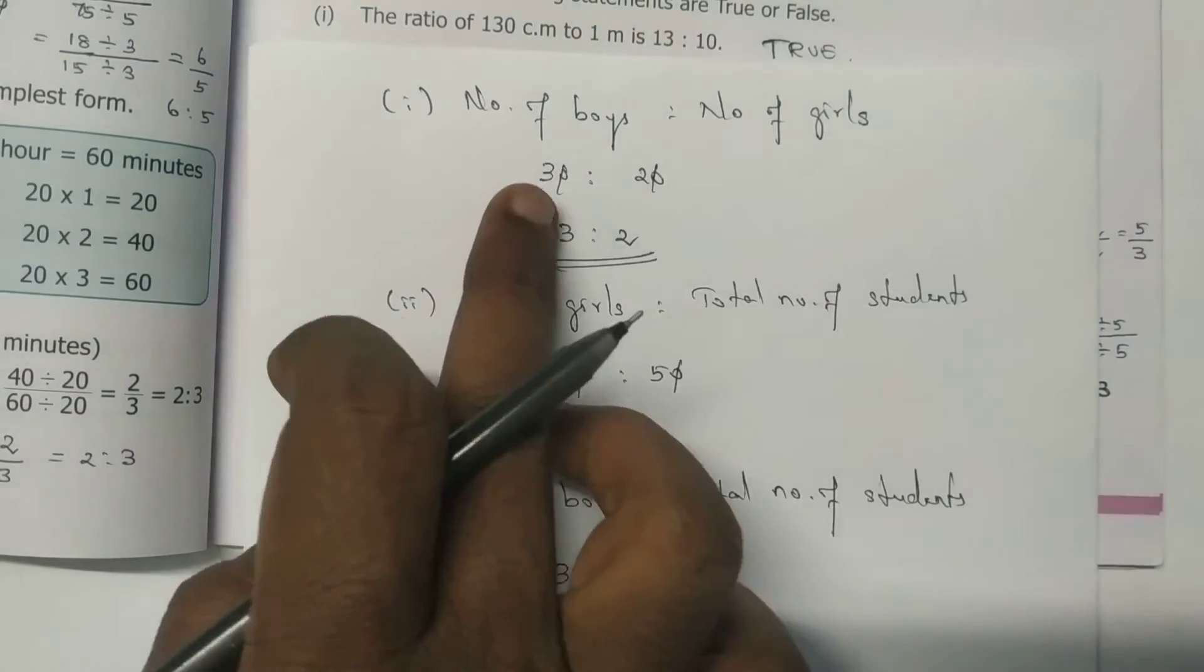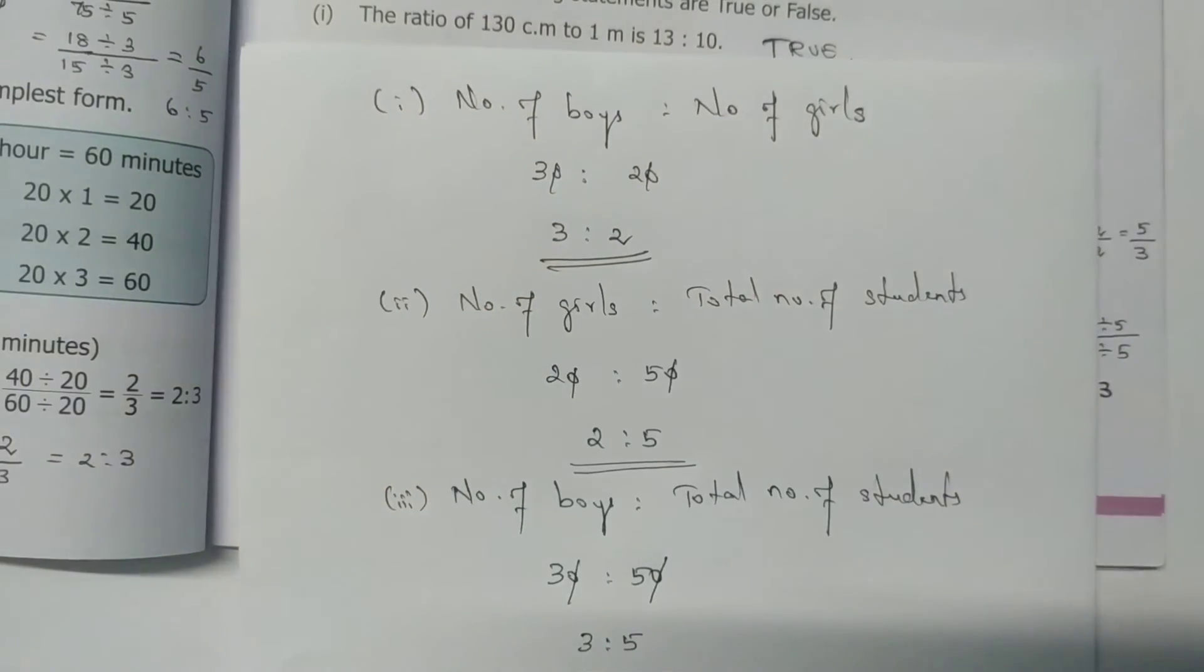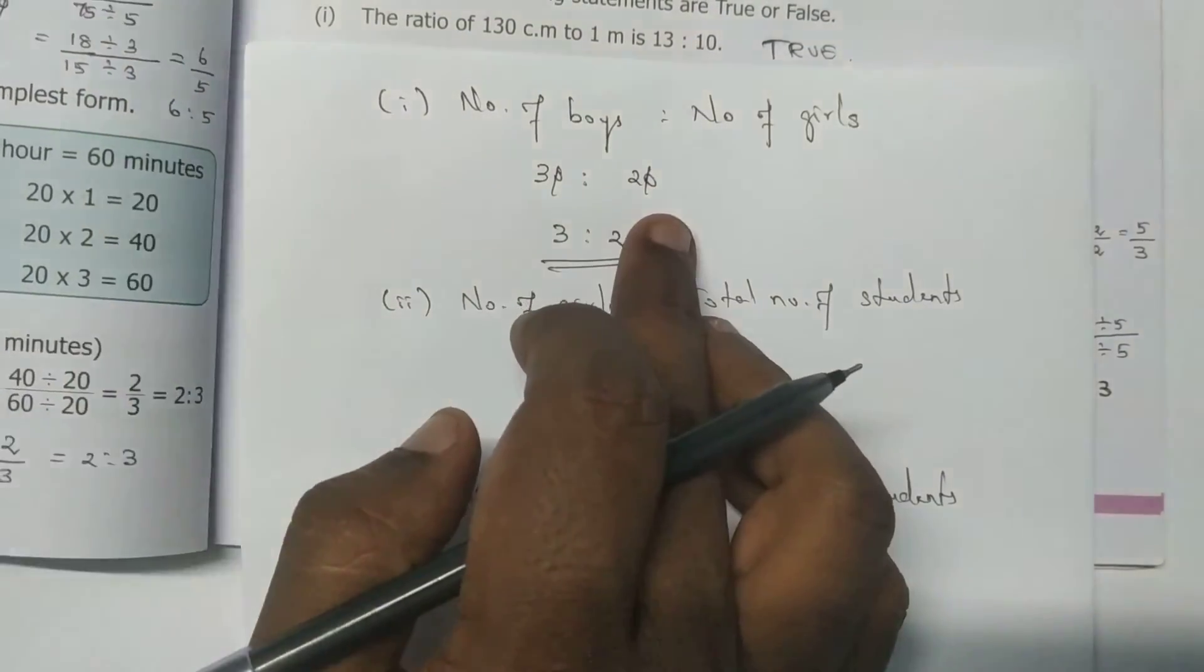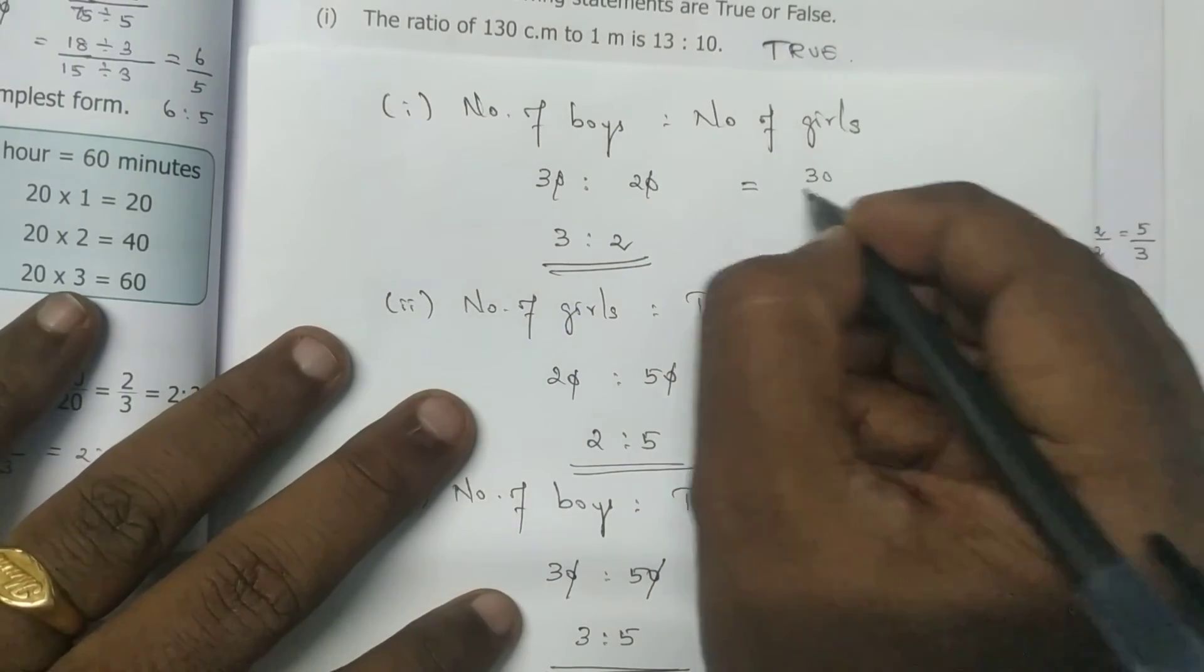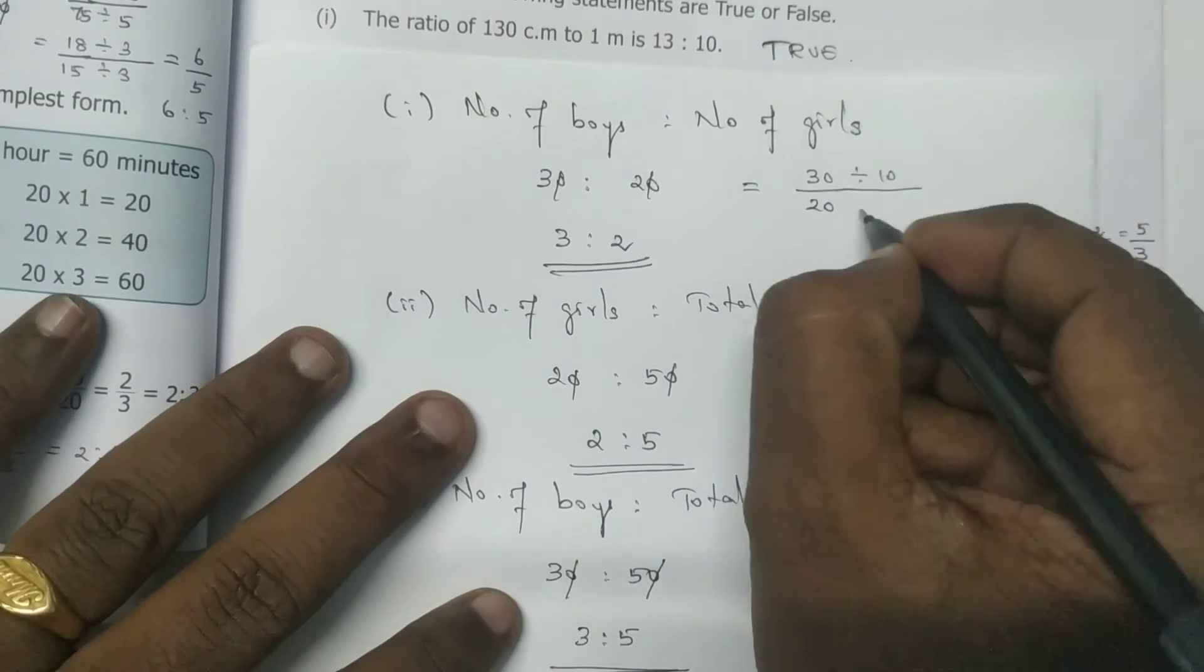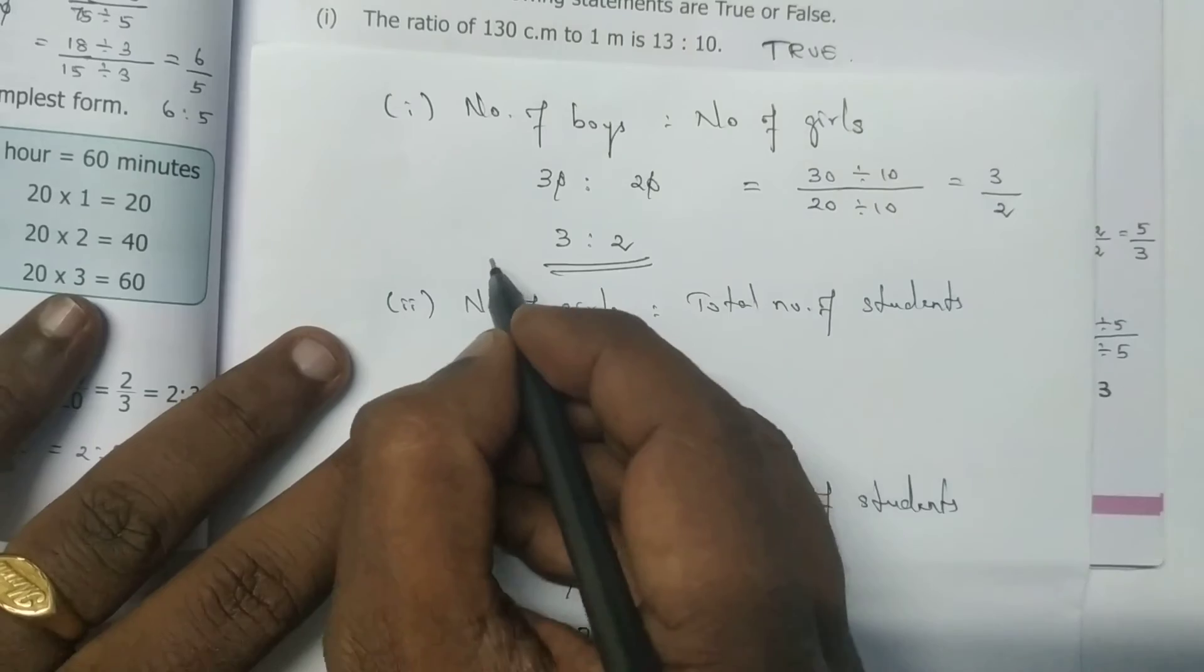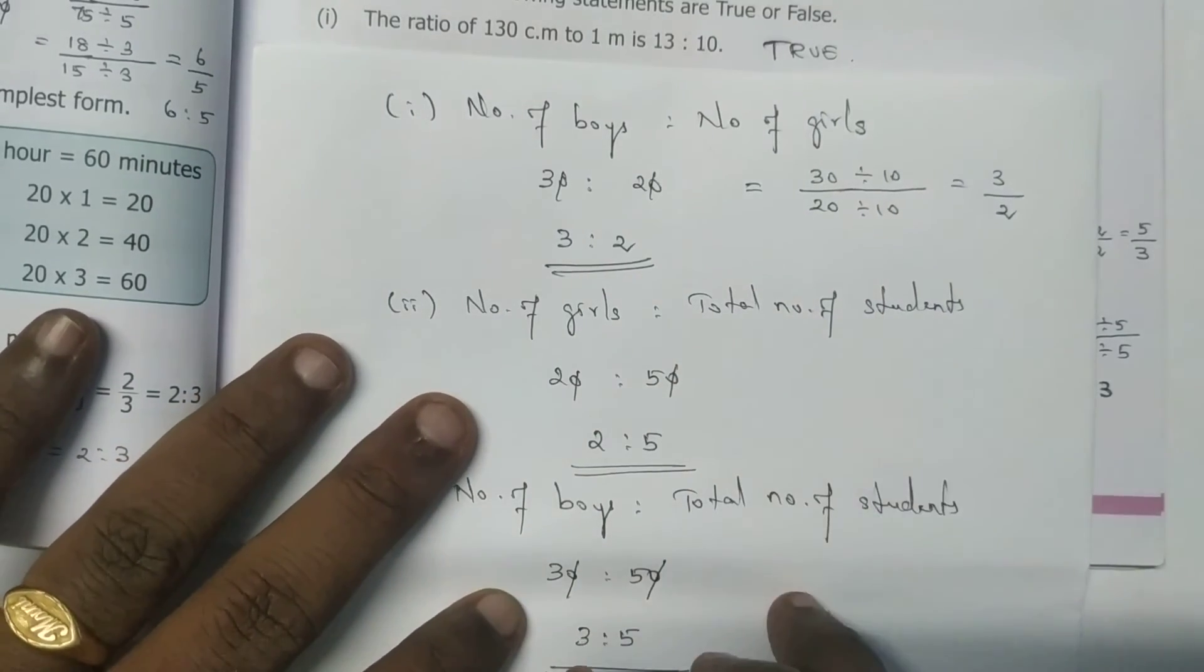Number of boys, number of girls. So 3 is to 2. If you cancel the zeros, the school method is 30 by 20, take common factor 10. 3 times 2, that is 3 is to 2. Divided by the common factor 10.